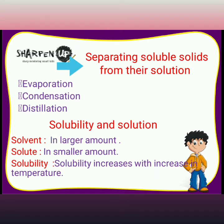Now, separating soluble solids from their solution can be done by three methods: evaporation, condensation, and distillation. Evaporation is the process of changing a liquid into vapor on heating. The process of evaporation is used to obtain salt from seawater.